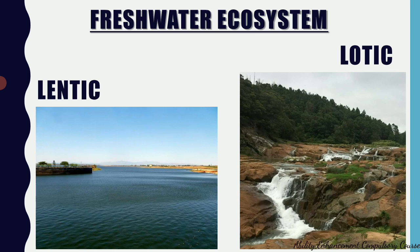Freshwater ecosystems are further divided into lentic and lotic ecosystems. A lentic ecosystem is one with a still or stagnant water body — for example, a lake, reservoir, pond, or small pool. Lotic ecosystems are those where the water body is flowing — an easy way to remember is 'flow, lotic.' Examples include a river, a stream, or a waterfall. So lotic means moving water and lentic means still or stagnant water.